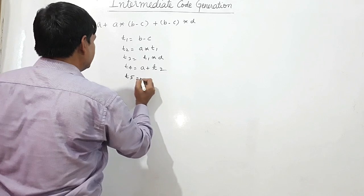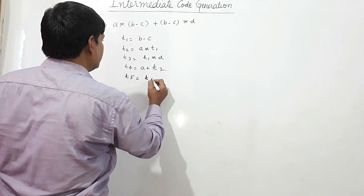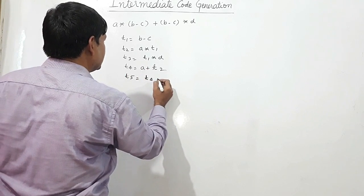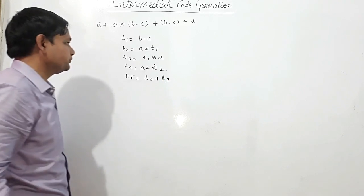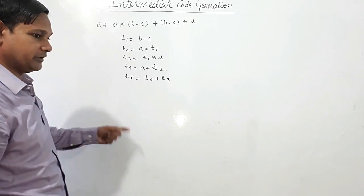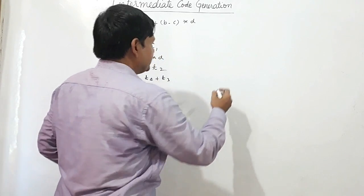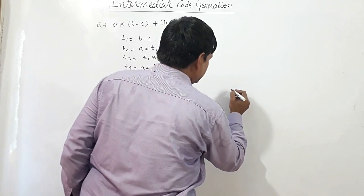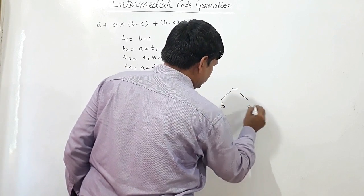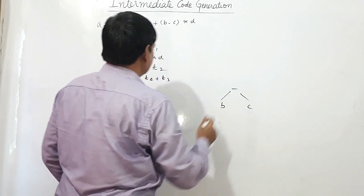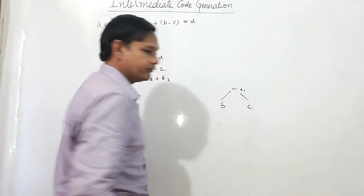Now t5 will be equal to t4 + t3. Let us see what is happening here. The bracket is evaluated first, so b minus c is stored in t1.